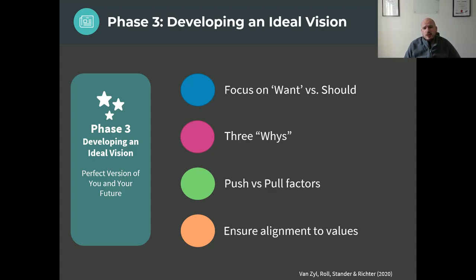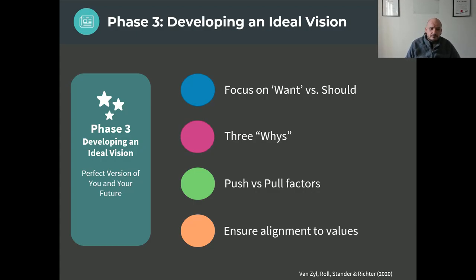We also focus on pull factors rather than push factors. Push factors are things that push you away; pull factors are things that draw you toward something. If I want to run away from things, the issue is always going to be there. But if I'm going toward something because it's better or more amazing, I'm going to be a lot more committed. In this phase, if we know what the ideal vision is, we ask the person to create the perfect version of themselves by telling a story from 20 years in the future, ensuring alignment between this vision, their values, their goals, and their capabilities.